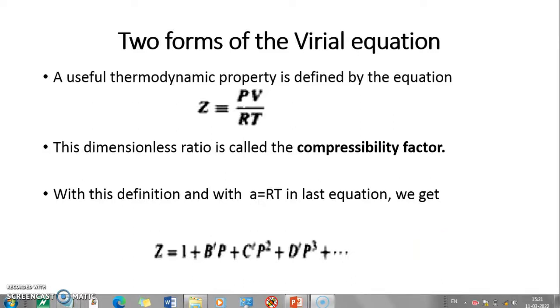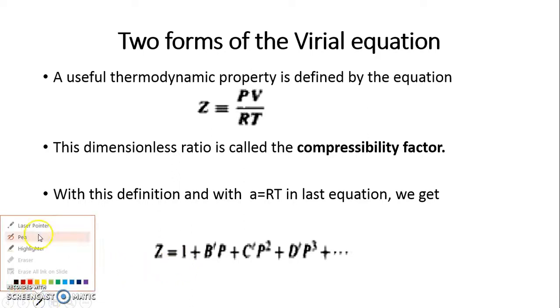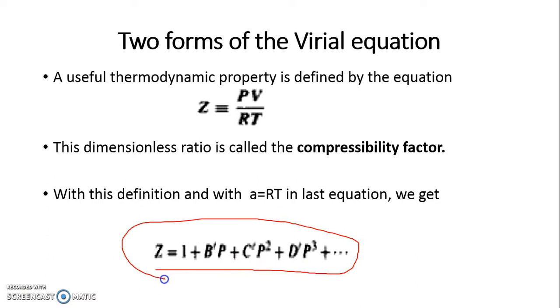Friends, we discussed Virial Equations of State and two forms of Virial Equation of State in our previous video. One form is z equals 1 plus b dash p plus c dash p square, where b dash, c dash, d dash are the Virial Coefficients, p is pressure, and z is compressibility factor giving idea about deviation from ideality.